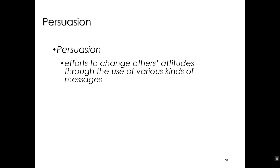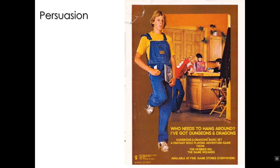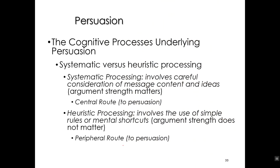Our final topic for today is persuasion. Persuasion is efforts to change attitudes through the use of various kinds of messages. Advertisements are a classic example. One of the theories I like to focus on is the cognitive processing theory that underlies persuasion: the elaboration likelihood model. This model posits two different cognitive systems which underlie attitude change.